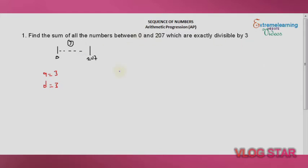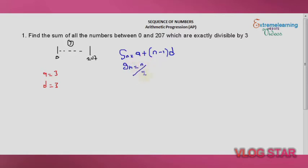Now for finding the sum in arithmetic progression, we have two formulas. The first is: the last term = a + (n − 1)d. The second is: S(n) = n/2 × [2a + (n − 1)d].